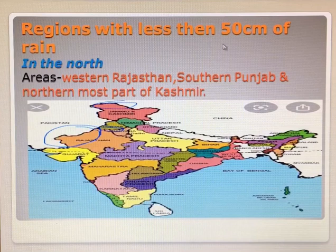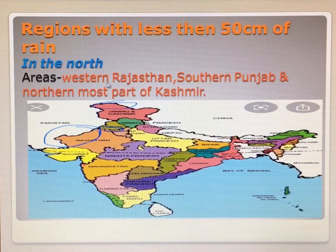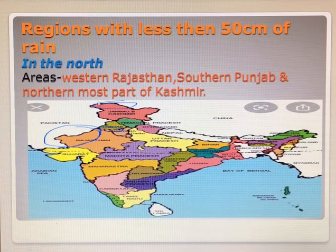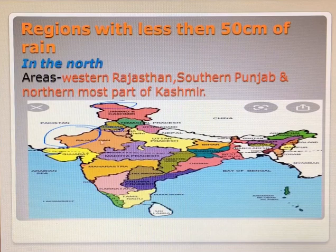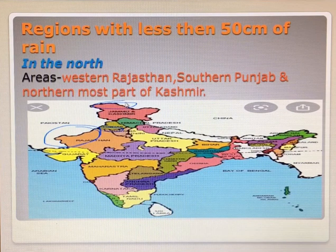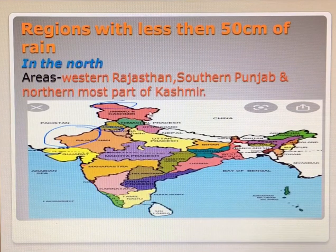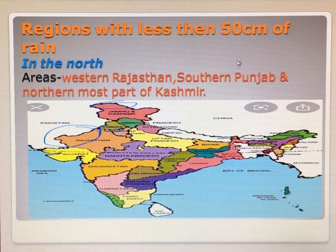Regions with less than 50 cm of rain in the north: areas like western Rajasthan, southern Punjab, and the northernmost part of Kashmir. These areas are highlighted on the map. This is western Rajasthan, then southern Punjab and the northernmost part of Kashmir — towards this area, it rains less than 50 cm of rainfall.